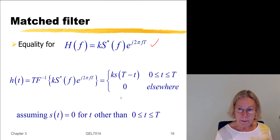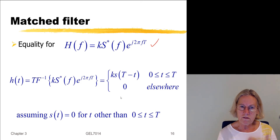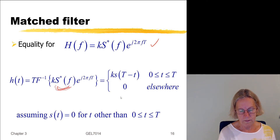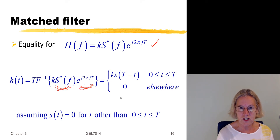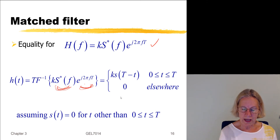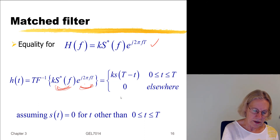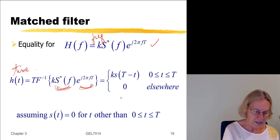Looking at this in the time domain, taking the inverse Fourier transform of the complex conjugate of the signal spectrum multiplied by the complex exponential — which represents a time delay — means we are flipping our signal in the time domain and applying a delay. This is one interpretation in the frequency domain and another in the time domain.